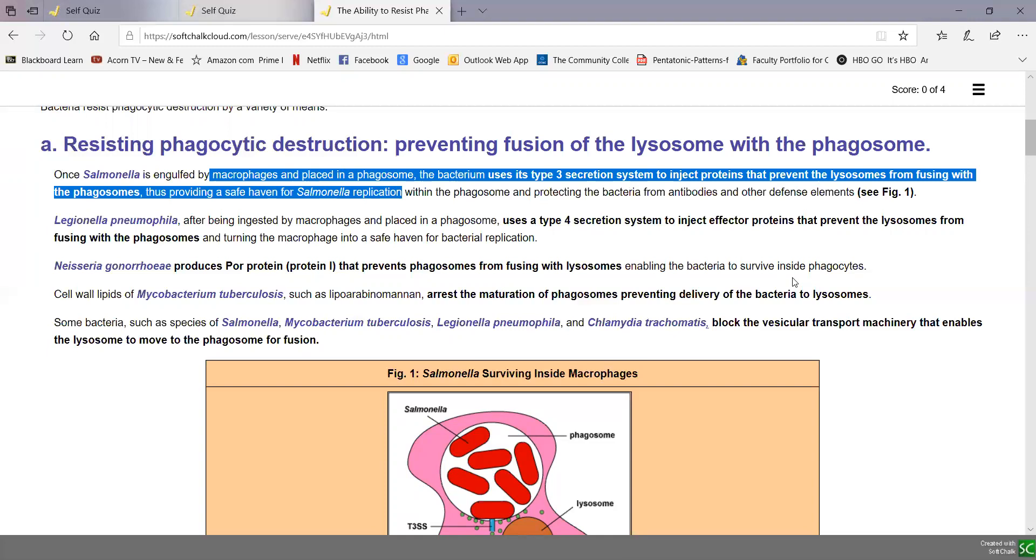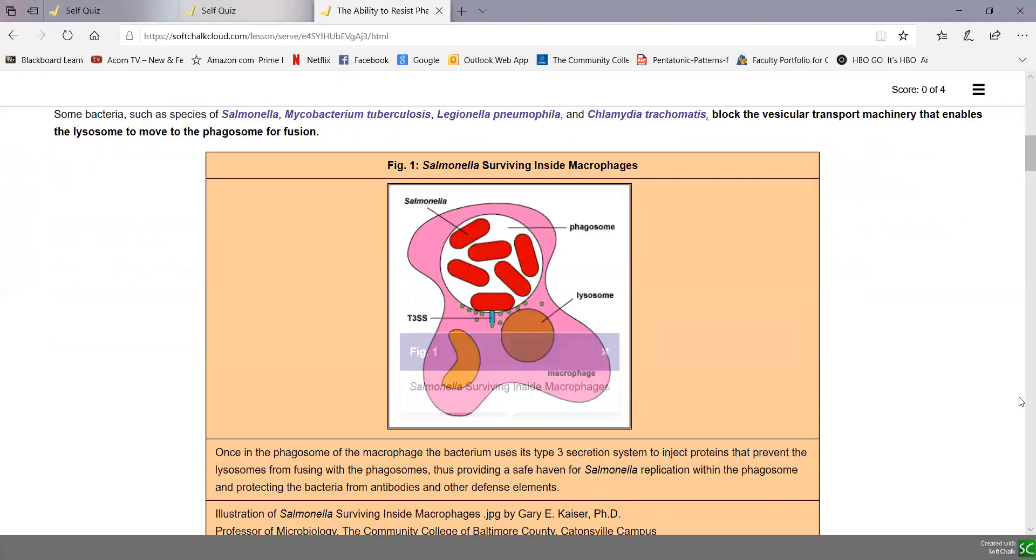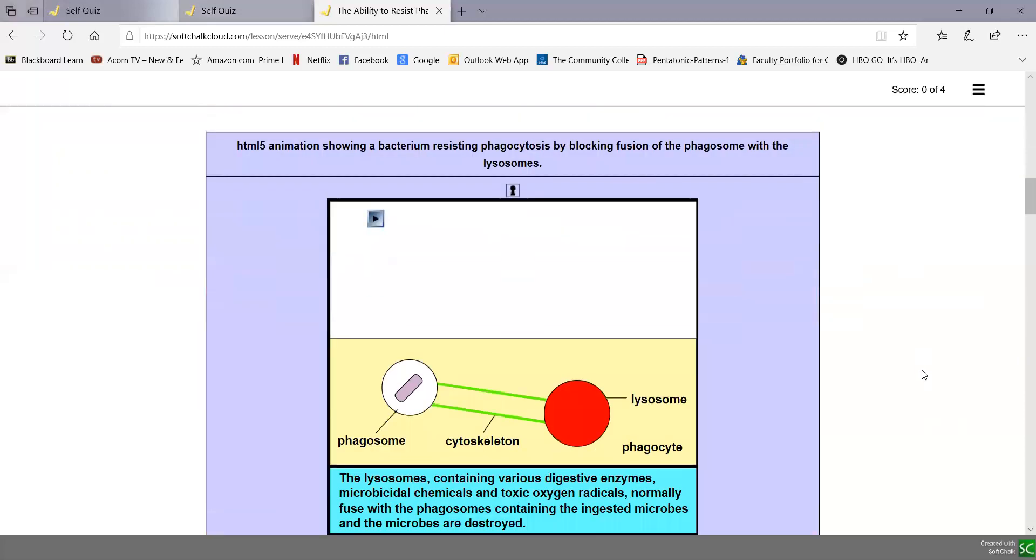This is the illustration we showed you of that, where the type 3 secretion system from the bacteria inside the phagosome of the macrophage is secreting proteins that are going to prevent the lysosome containing the killing chemicals from fusing with the phagosome containing the bacteria. And we also see that in this animation.